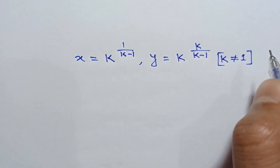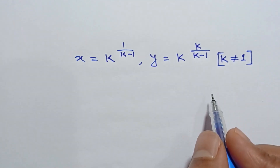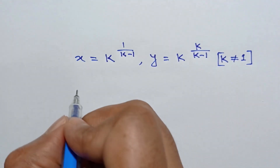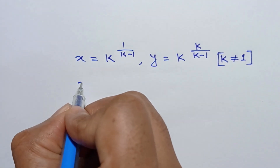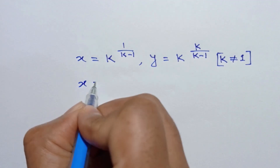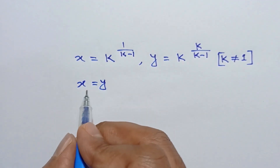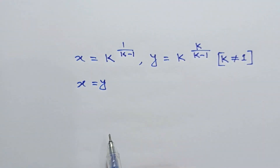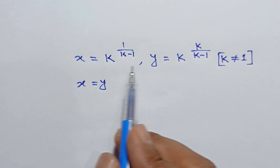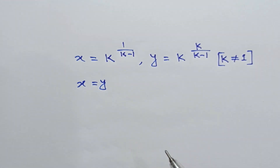And when k is equal to 1, from equation 1 we can write x is equal to y. This is also a solution of this equation, so these are the two sets of solutions.